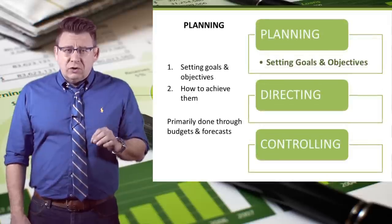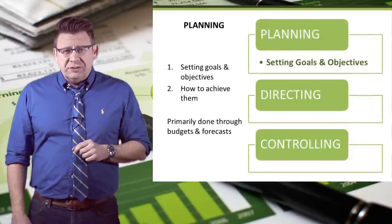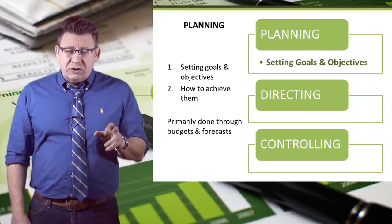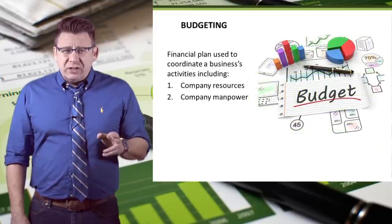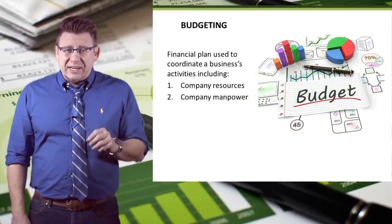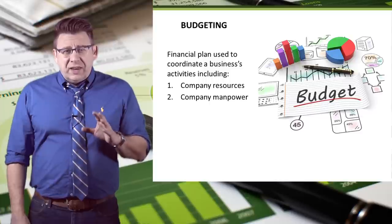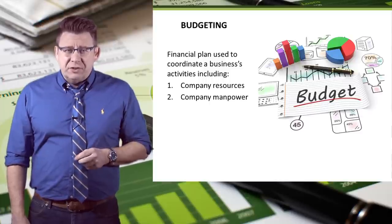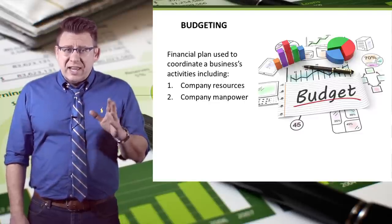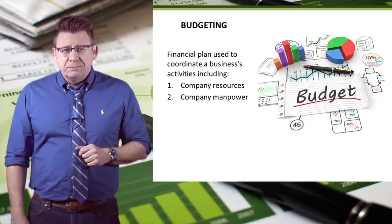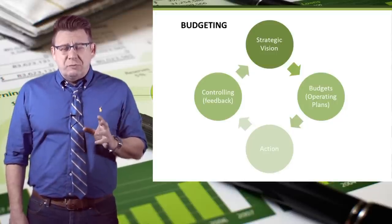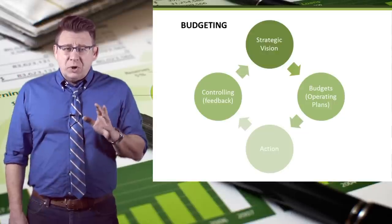Planning involves setting goals and objectives as well as how to achieve them. Managerial accounting aids in this function through budgeting and forecasting. A budget is a financial plan that managers use to coordinate business activities. Management can then estimate future costs and revenues, and the budgeting process is perhaps the most widely used management accounting tool employed by companies.